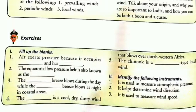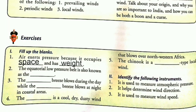In the exercises, first are fill in the blanks. First one: air exerts pressure because it occupies blank and has blank. Answer: air exerts pressure because it occupies space and has weight. Next: the equatorial low pressure belt is also known as the blank. Answer: the doldrums.